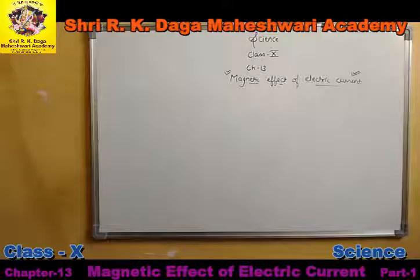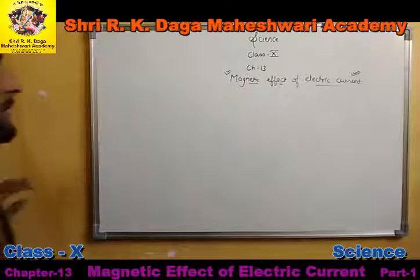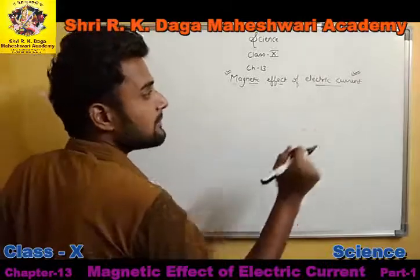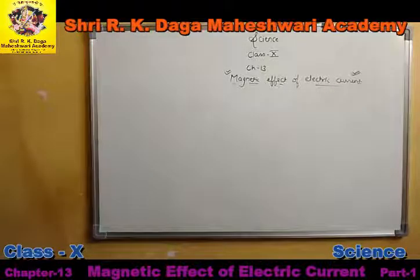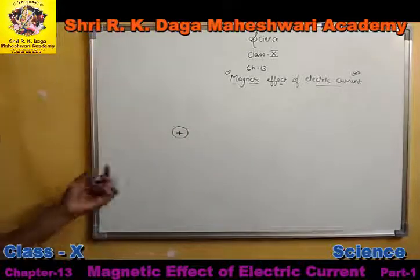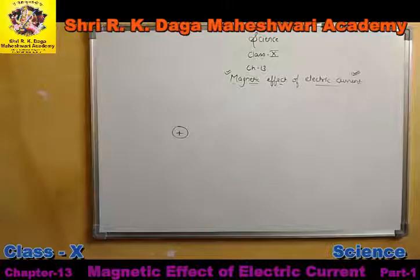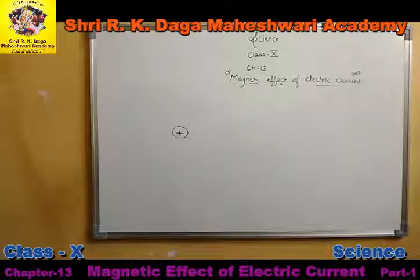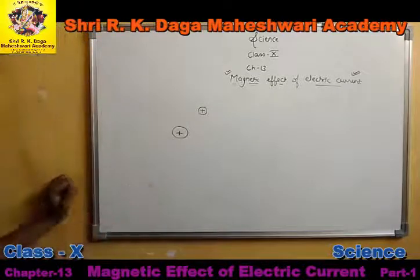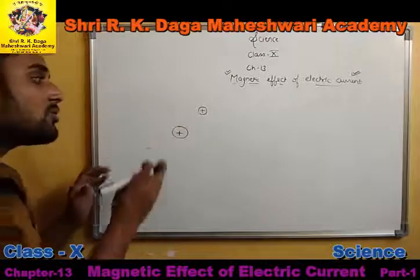First of all, we should understand what a magnetic field is. We know from the past chapter about the electric field. If I place an isolated positive charge here, this charge will repel another positive charge placed near it.